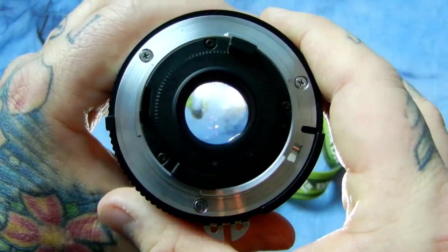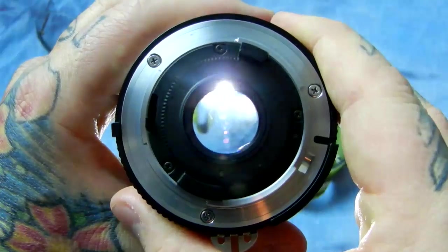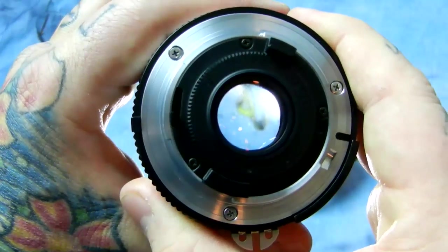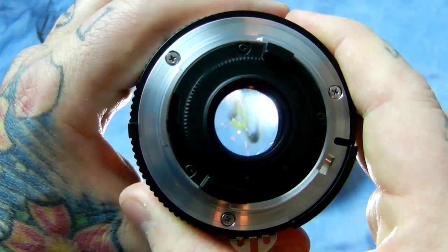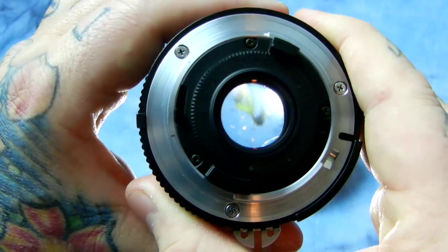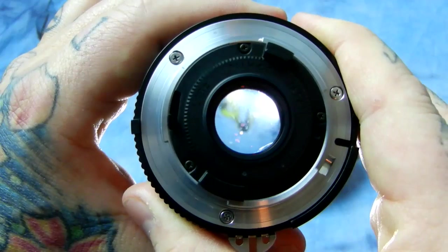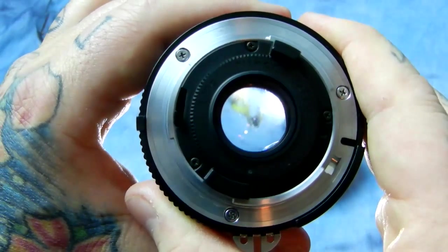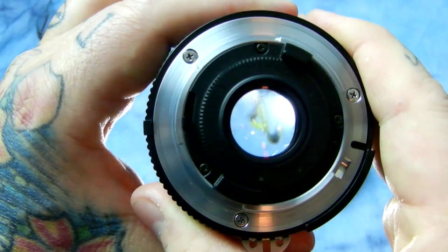Hello. I'm going to show you what balsam separation looks like. The rear two elements of this 16mm 2.8 Nikkor are glued together, and when that cement comes apart it's called balsam separation.